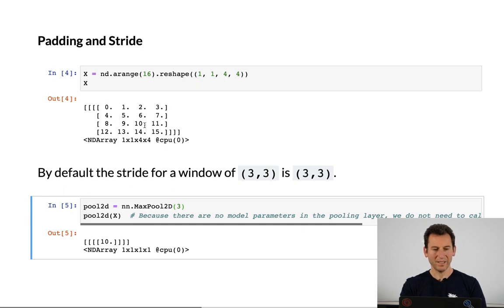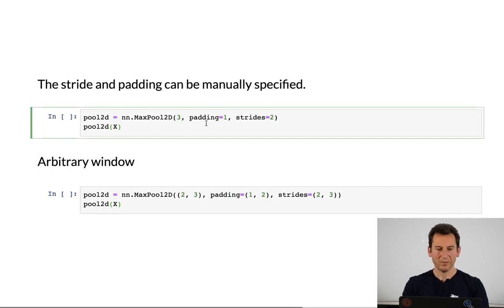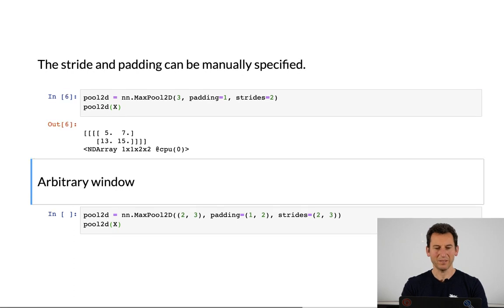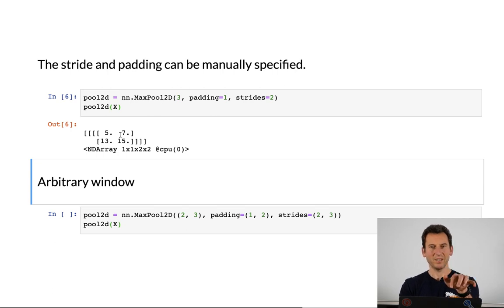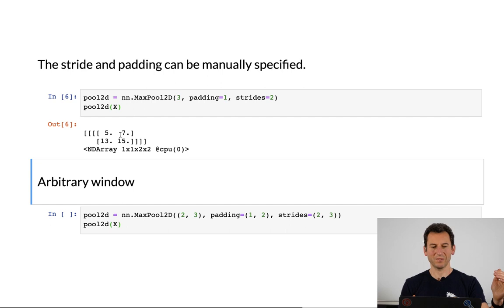The entry is 10 because the largest entry in that first 3x3 block is 10. Now if I want to change this, I could use padding of 1 and stride of 2. In that case, with a 3x3 pooling applied to a 4x4 matrix, that's effectively a 6x6, and then with a stride of 2 that gives me a 2x2 matrix as a result.